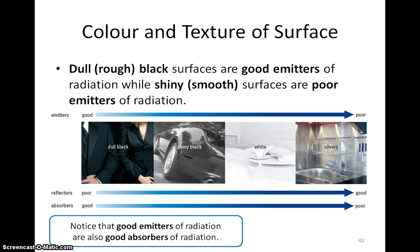Interestingly, good emitters of radiation are also good absorbers of radiation. For example, black surfaces are better emitters than white surfaces. Objects may not only absorb incoming radiation — they may also reflect some radiation. Hence, poor absorbers of radiation are actually good reflectors of radiation.